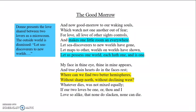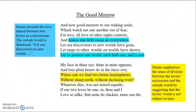Donne emphasises the sense of separation between the microcosm of the lovers and the outside world by suggesting that the microcosm is not subject to the forces of time which govern the outside world. He writes that their world has 'no sharp north and no declining west.' He goes so far as to suggest that as the microcosm isn't subject to time, it can't be subject to death either — 'none do slacken, and none can die.'